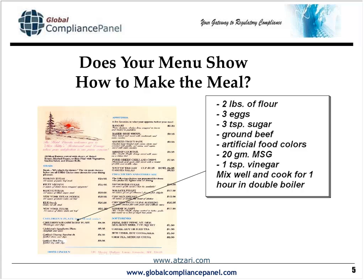I think we would agree that one thing we would not expect to find in such a document would be the recipe, the ingredients, and the instructions on how to make the meal. That's pretty obvious, because you're not there to make the meal — you're there to enjoy it. So even though that element may seem related to the others, it serves a totally different function. It does belong on a document, but that document belongs in the kitchen, not in the dining room. Just because elements are related does not automatically mean they belong on a particular document.